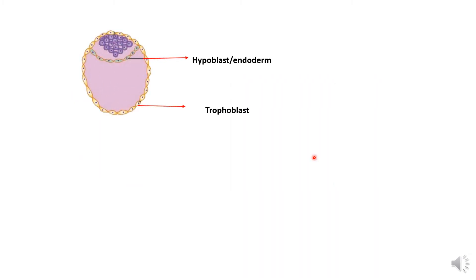Initially, the first layer to form is the endoderm. In the previous section, we saw that we have the trophoblastic layer and the inner cell mass. Some cells of the inner cell mass begin to differentiate — meaning they become different from the other cells. So some cells of the inner cell mass, or embryoblast, will get differentiated.